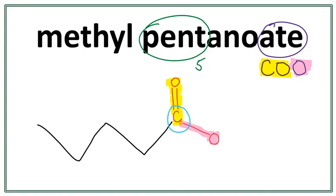And that carbon in the functional group is always the first carbon. This is our second carbon, third carbon, fourth carbon, and the fifth carbon.